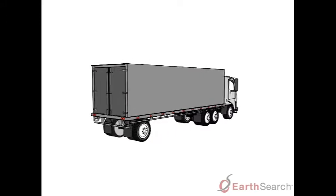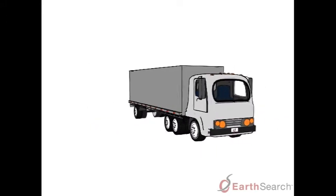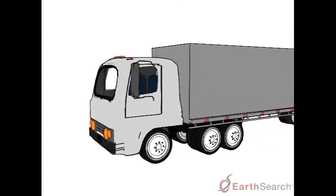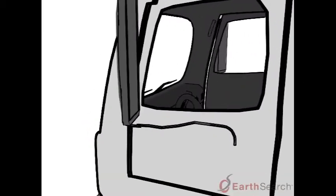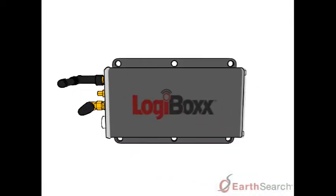...it's crucial that your stuff be tracked, secured, and monitored in real time, all of the time. That's why this truck has a Logibox from Earthsearch installed in the cab. A Logibox from Earthsearch is an intelligent GPS device with an RF module embedded in the hardware.